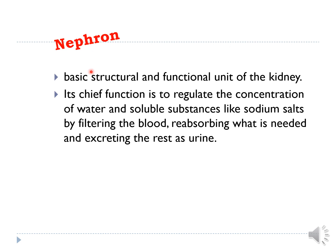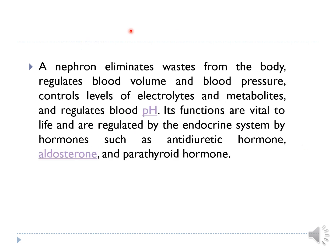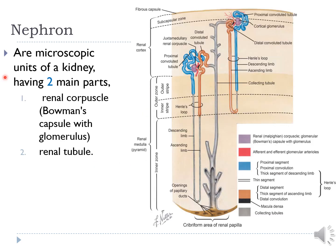The nephron is the basic structural and functional unit of the kidney. Its chief function is to regulate the concentration of water and soluble substances like sodium salts by filtering the blood, reabsorbing what is needed, and excreting the rest as urine. The nephron eliminates waste, regulates blood volume and pressure, controls levels of electrolytes and metabolites, and regulates blood pH. Its functions are regulated by hormones such as anti-diuretic hormone, aldosterone, and parathyroid hormone. Nephrons have two main parts: the renal corpuscle (Bowman's capsule with glomerulus) and the renal tubules.